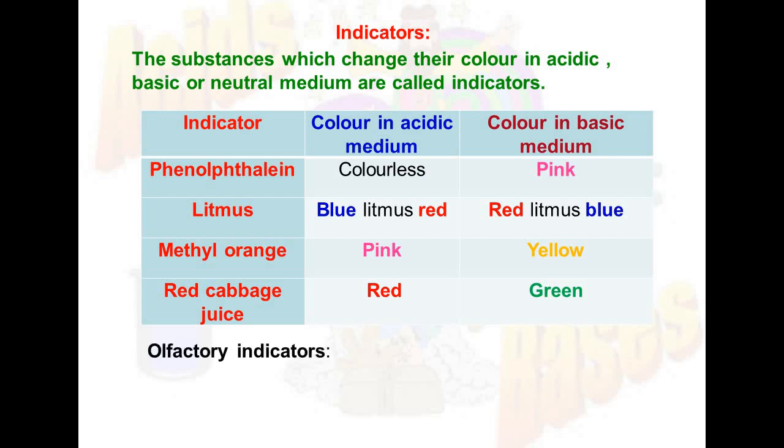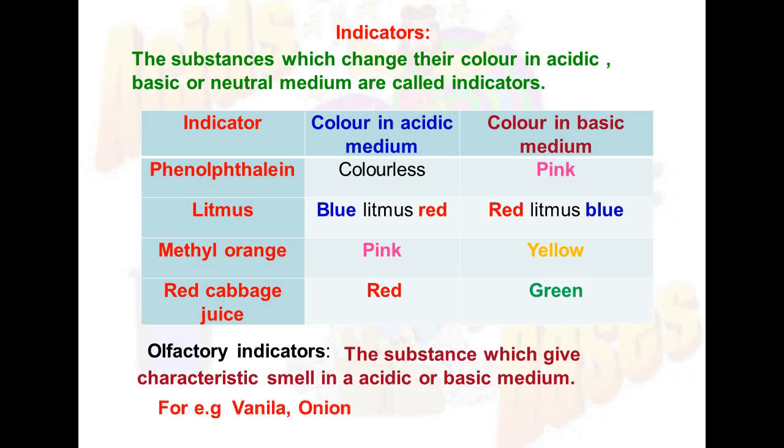Now one more important definition: olfactory indicators. The substances which give characteristic smell in acidic or basic medium are called olfactory indicators, for example, vanilla and onion.